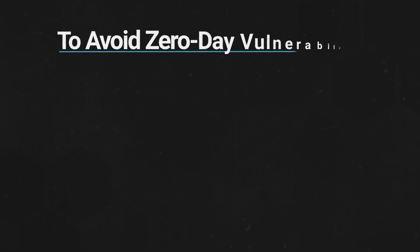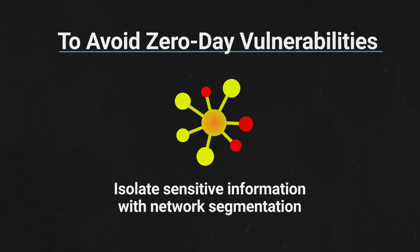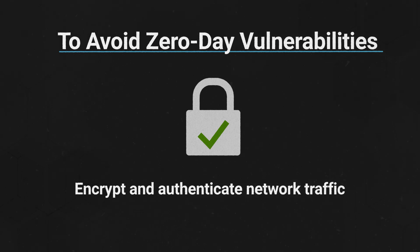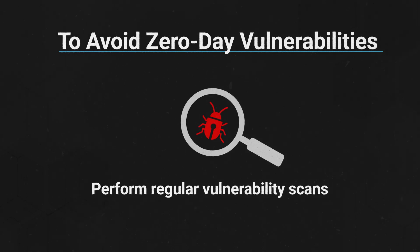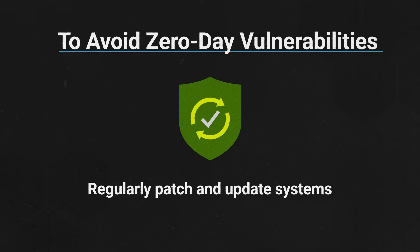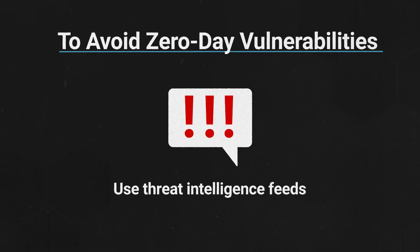By definition, zero-day vulnerabilities can't be known in advance. However, steps can be taken to reduce their likelihood. Organizations should isolate sensitive information with network segmentation, encrypt and authenticate network traffic, perform regular vulnerability scans, regularly patch and update systems, and use threat intelligence feeds to stay informed about emerging threats.